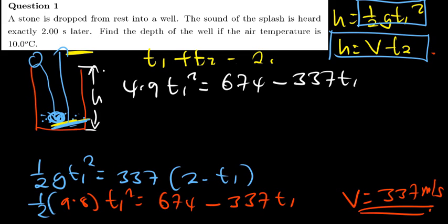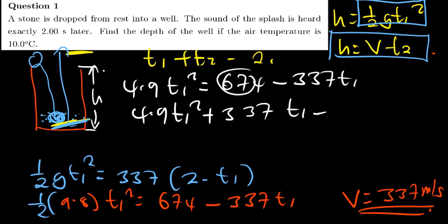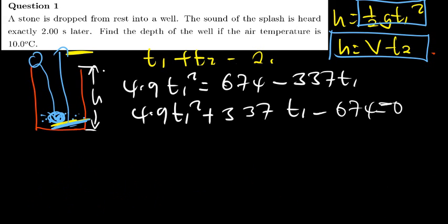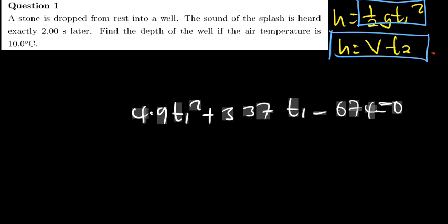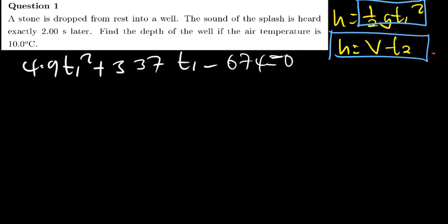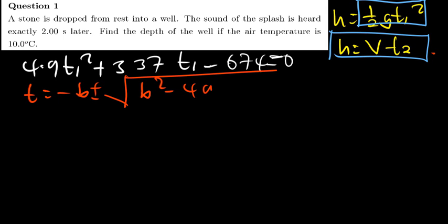Rearranging to standard quadratic form by shifting all terms to the left: 4.9T1² + 337T1 − 674 = 0. Using the quadratic formula T = (−B ± √(B² − 4AC)) / 2A, where A = 4.9, B = 337, and C = −674.